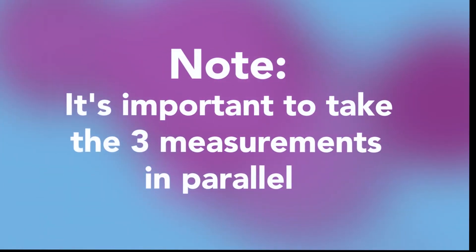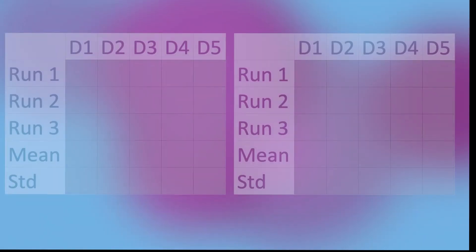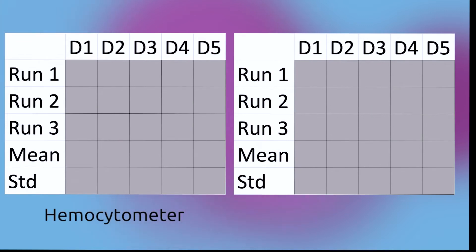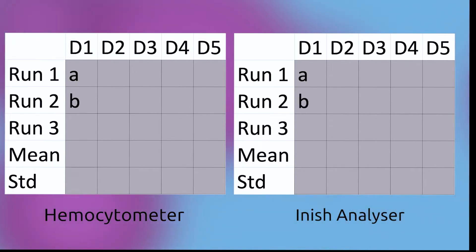It's important to take the three measurements in parallel. In other words, after preparing a solution, you measure the concentration first using a hemocytometer, then using the Inish analyzer, then using the hemocytometer again, then the Inish again, and so on until you've taken all your measurements.